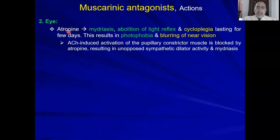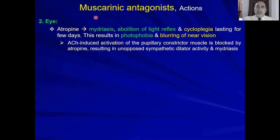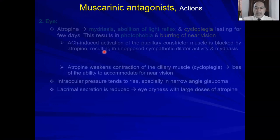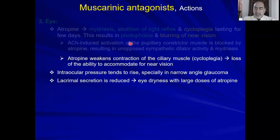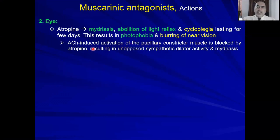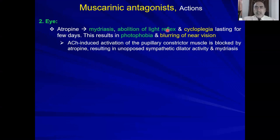On the level of the eye: the effects of the parasympathetic nervous system on the eye include miosis from activation of the constrictor pupillary muscle. This is blocked by atropine — inhibiting the constrictor muscle allows the sympathetic dilator activity to prevail and causes mydriasis. The mydriasis caused by these drugs can cause photophobia and abolition of the light reflex, because when intense light enters the eye, the normal response is miosis. Patients cannot narrow the pupil, so they experience photophobia.